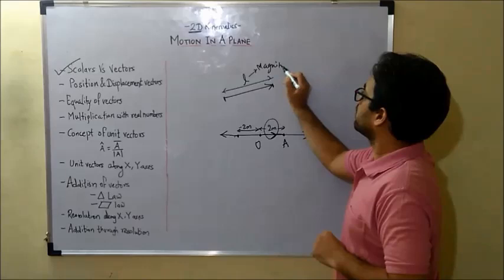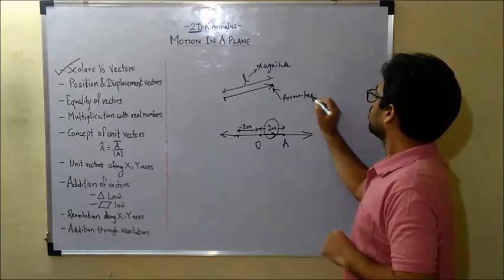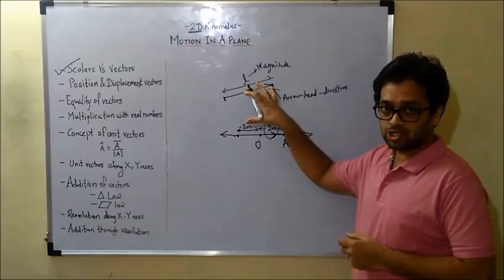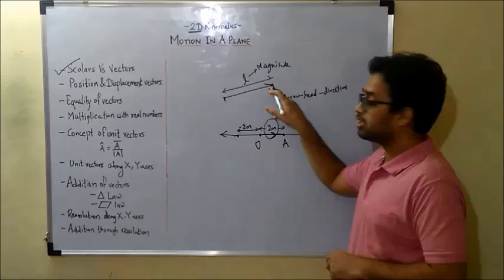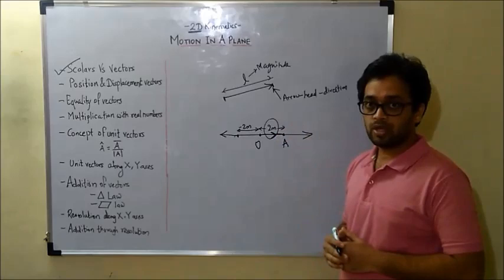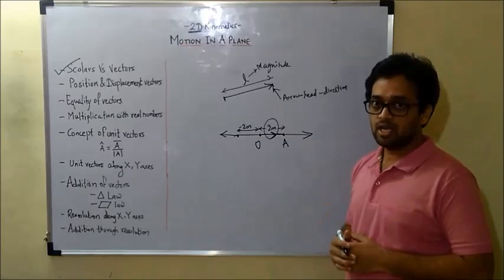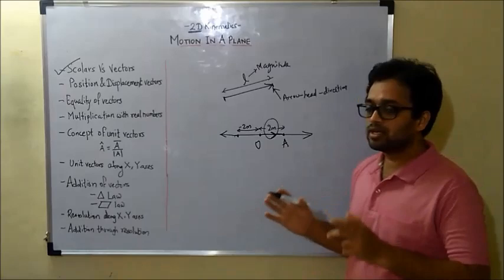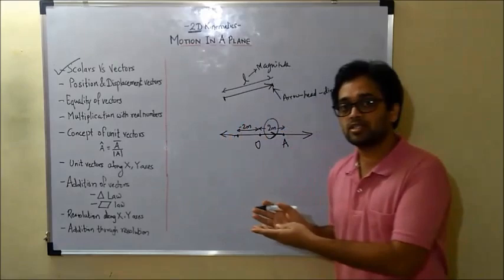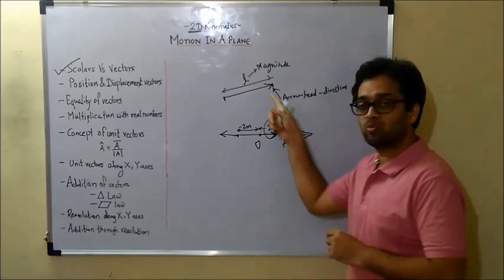So how do we define a vector? A vector is a graphical representation of a physical quantity. Right now the physical quantity being graphically represented is position. Can I denote velocity by the same graphical representation? Yes. Can I denote acceleration the same way? Yes. So a vector is not some rocket science concept — it is just a graphical representation of your physical quantity, specifying both how big it is and where it is directed.